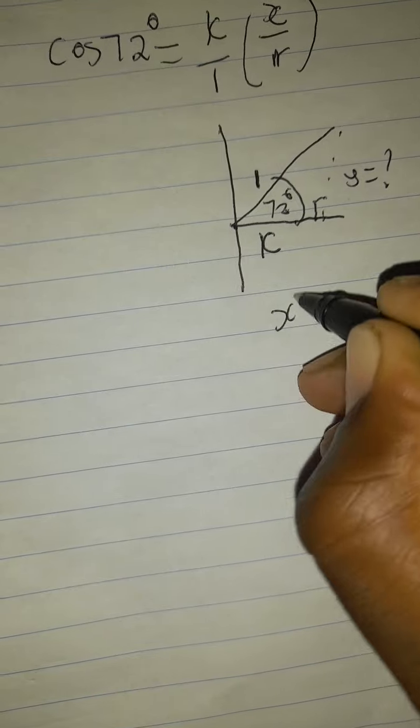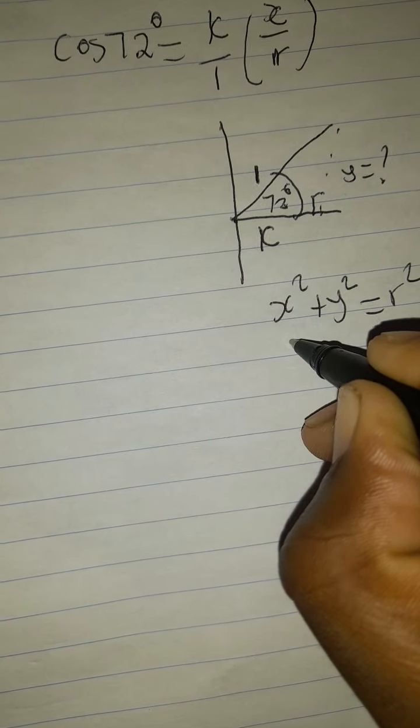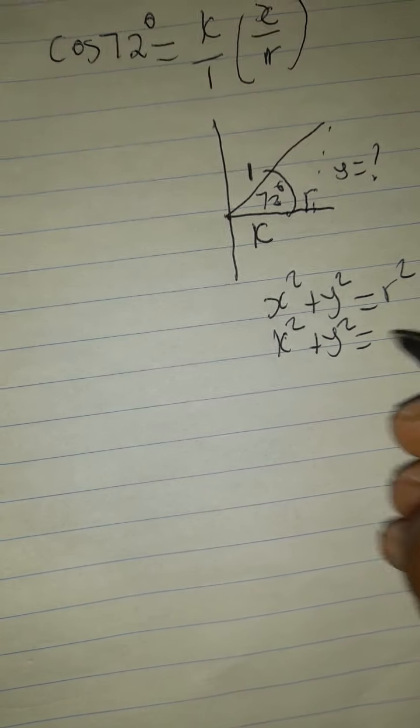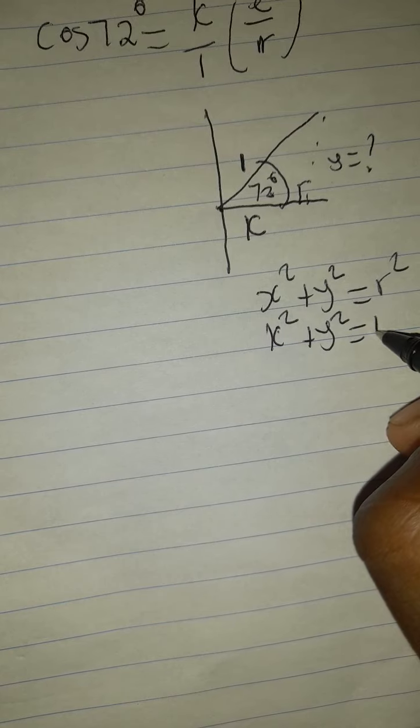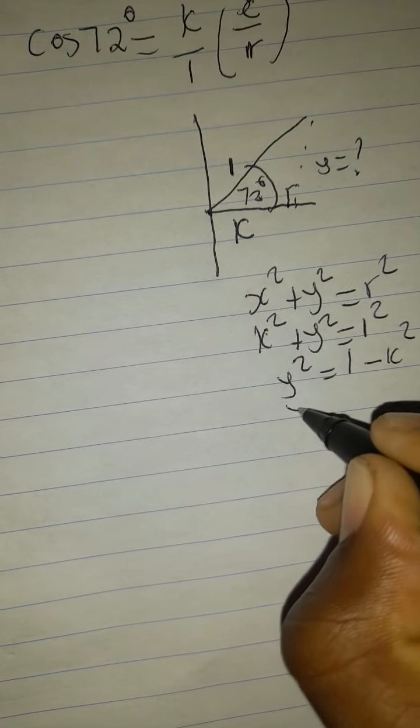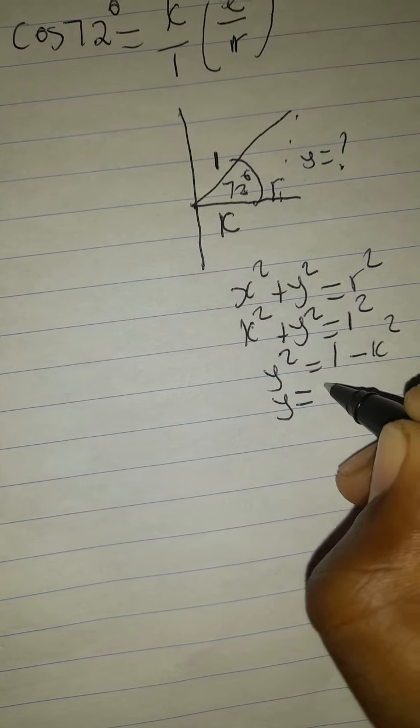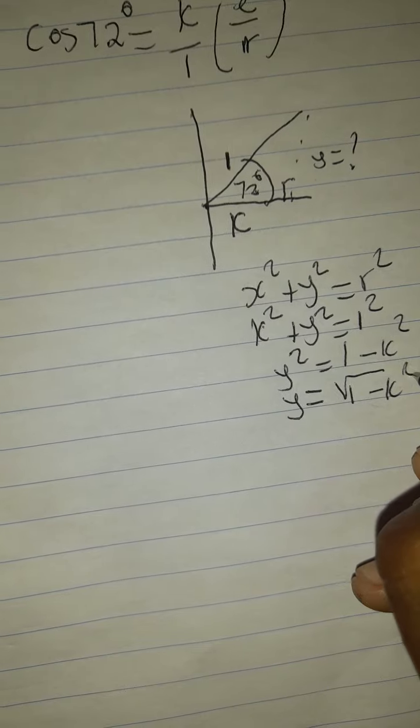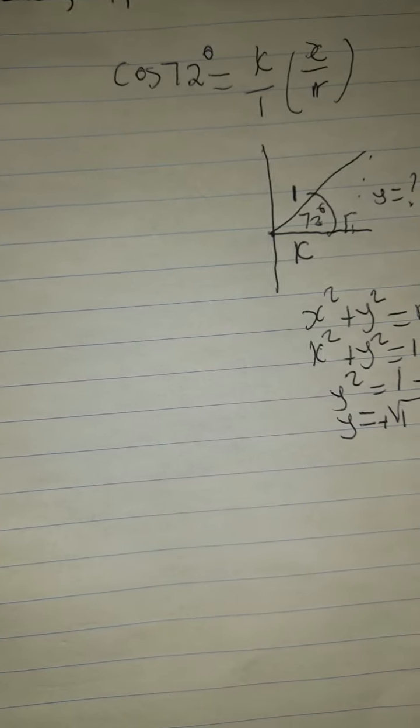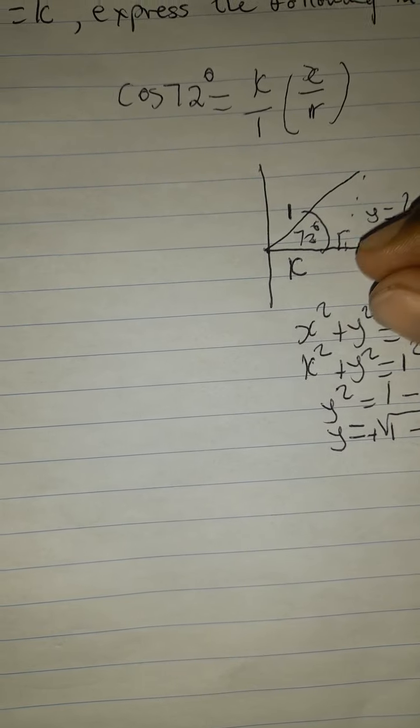So we are going to use the theorem of Pythagoras. That's x squared plus y squared equals r squared. It's K squared plus y squared equals 1 squared. Let's transpose. 1 squared is 1. Transpose K becomes negative K squared. When we root both sides, y equals root of 1 minus K squared. In this case, we are going to take the one that is positive because we are working on the first quadrant where all the trigonometric ratios are positive.